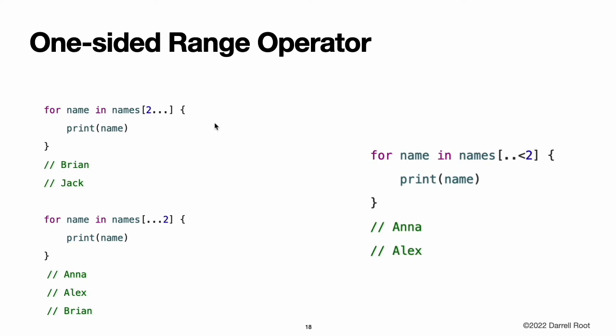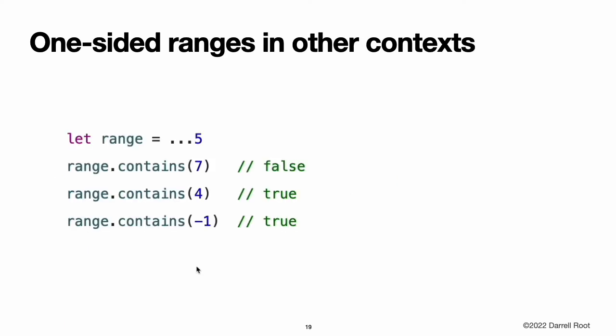One-sided ranges. The closed range operator has an alternative form for ranges that continue as far as possible in one direction. For example, a range that includes all the elements of an array from index 2 to the end of the array. In these cases, you can omit the value from one side of the range operator. This kind of range is called a one-sided range because the operator has a value on only one side. The half-open range operator also has a one-sided form written with only its final value, and the final value is not part of the range. You cannot iterate over a one-sided range that omits a first value because it is not clear where iteration should begin. You can iterate over a one-sided range that omits its final value, because the range continues indefinitely — but make sure you add an explicit end condition for the loop.